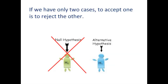For example, if we have a null hypothesis and an alternate hypothesis, and we accept the alternate hypothesis, that is to reject the null hypothesis. If we reject the null hypothesis, that is to accept the alternate hypothesis, because of these two possible claims, only one can be true.